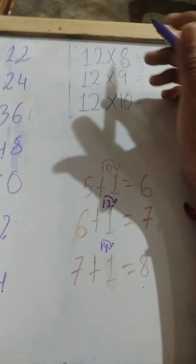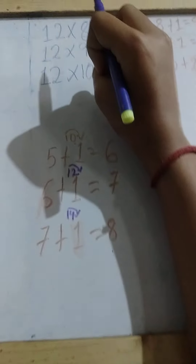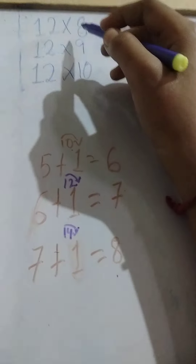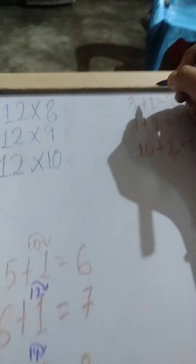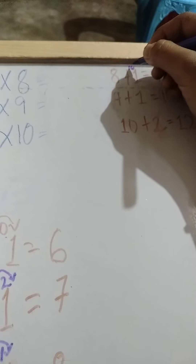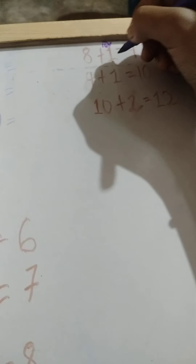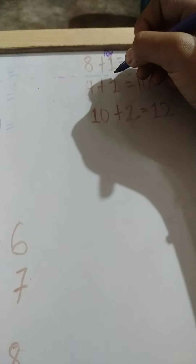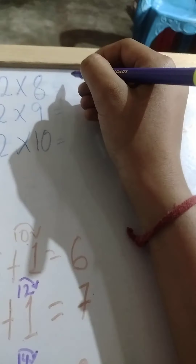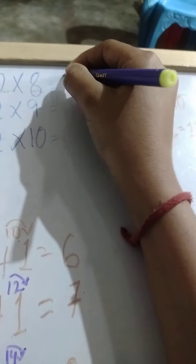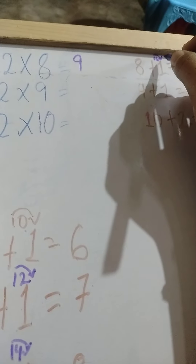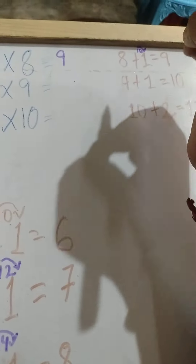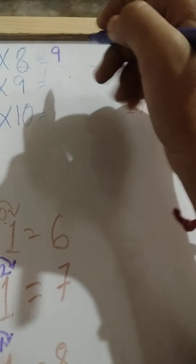For 8: 8 ones are 8. We put the 8 in our hand. Then 8 twos are 16. The 1 from 16 will be added to 8, giving the answer 9. We write the 9 here, and then the 6 is in our hand, so we write the 6 here.